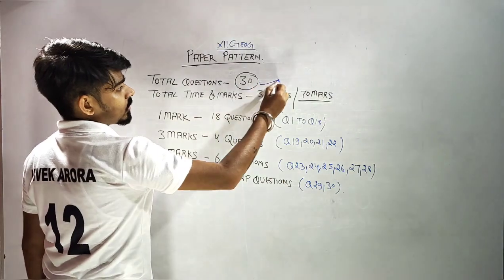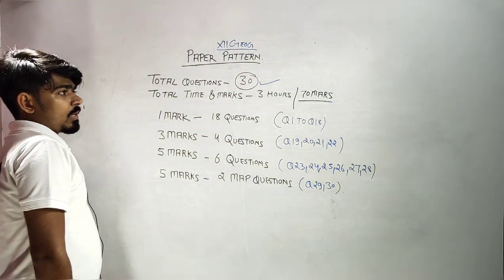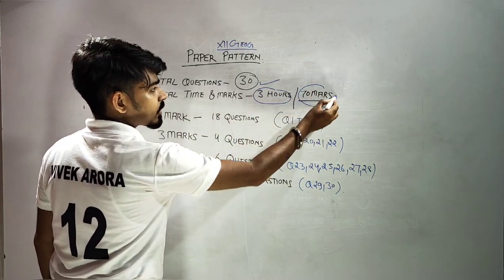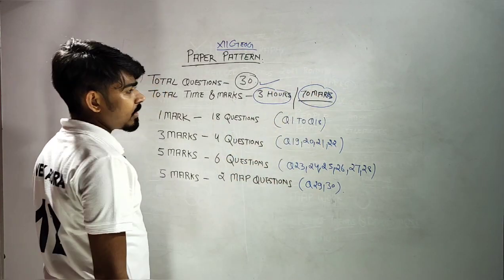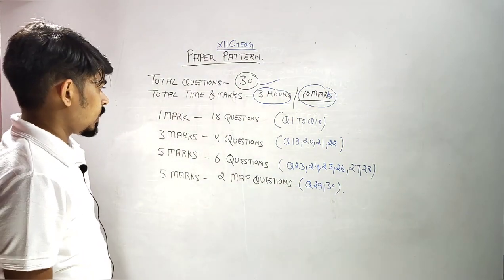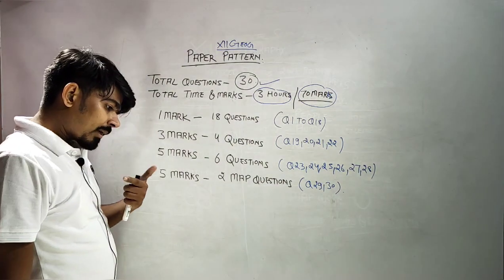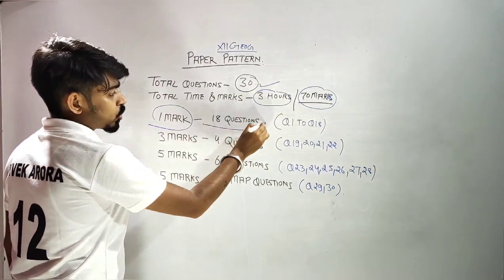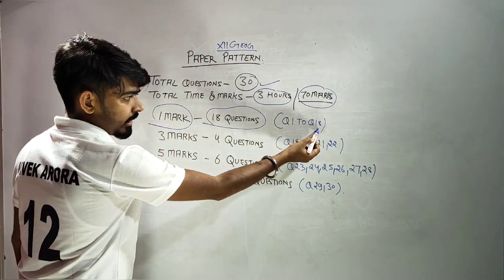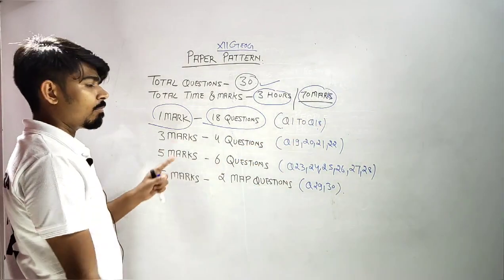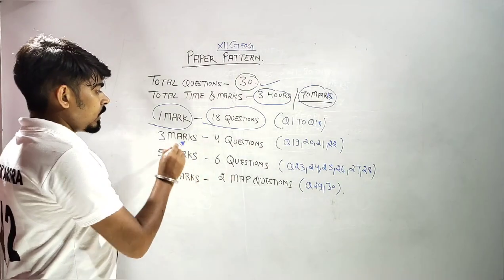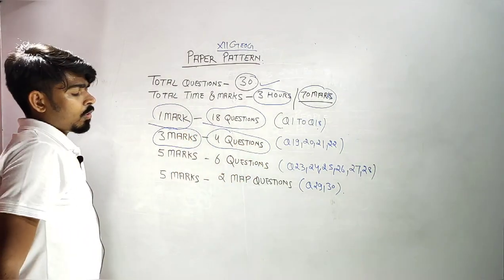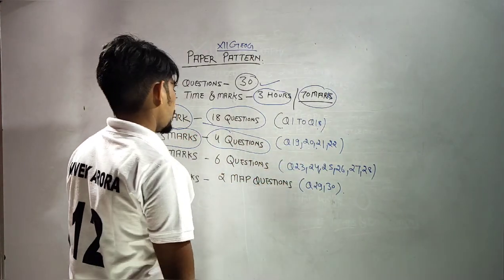30 questions को solve करने के लिए समय मिलेगा। Question number 1 से 18 तक — ये 18 questions एक-एक number के होंगे। 3 marks के 4 questions होंगे: Question number 19, 20, 21, और 22।